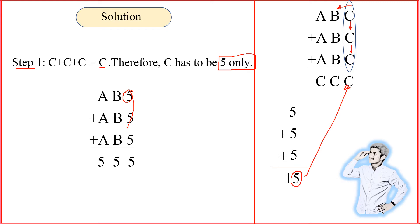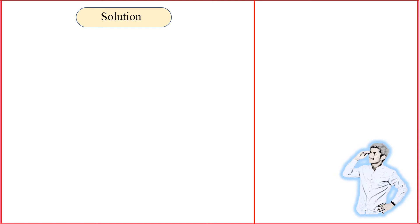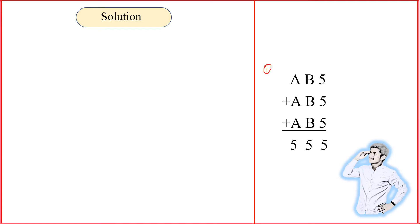Now let's figure out the other letters. The next digit we're going to find is the tens place. We know the ones place — three C's — gave us 15, so there is a carry of 1 into the tens place. So we have 3B plus 1, and that result must end in 5.